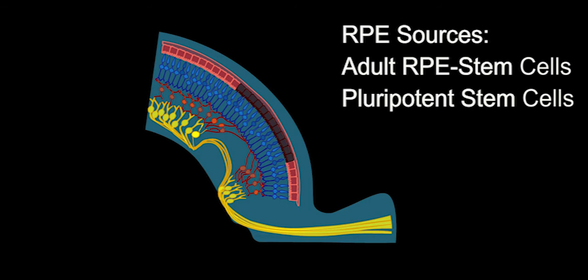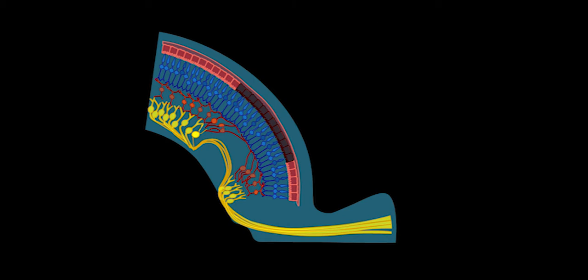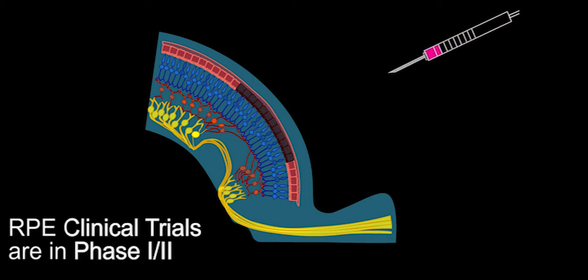New RPE cells can be generated from pluripotent stem cells or from adult RPE stem cells present in the eye. RPE transplants are already in phase one and phase two clinical trials, injected subretinally as a cell suspension or transplanted as a patch of preformed RPE on a scaffold.